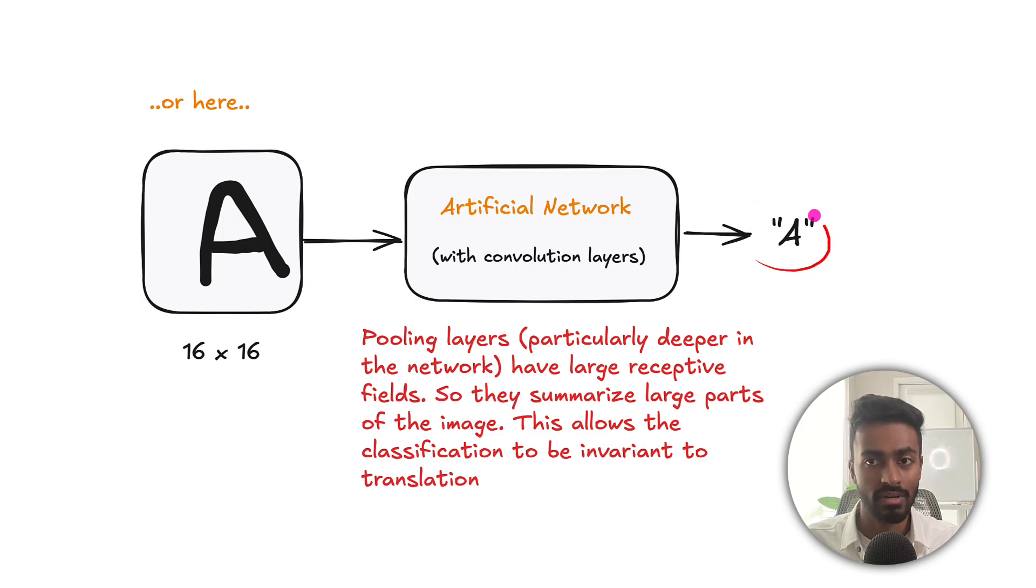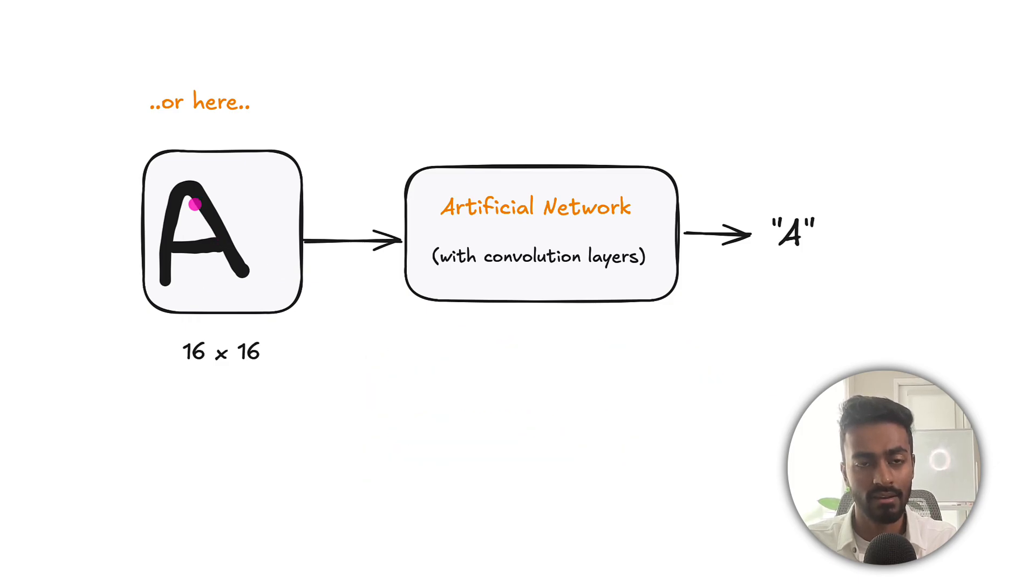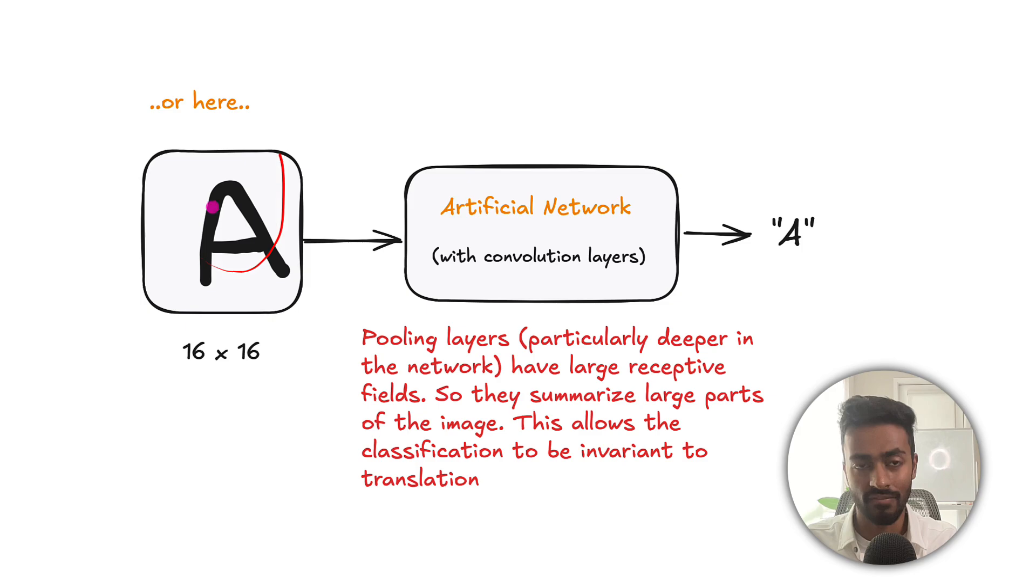But interestingly, in order to make sure this output is still unchanged, despite the translation, we can use something called pooling. So pooling layers, particularly in deeper parts of the network, they have large receptive fields. So that means that they're able to see larger swaths of the image itself. And the operation of pooling like when we do a max pooling or an average pooling is to summarize these large parts of the input image. And what this allows is the classification to be invariant, this classification output to be invariant with respect to translation. So that means that no matter where this A lies, whether it's here or here or here, it wouldn't really make too much of a difference because the pooling operation is going to summarize large parts of the image. And it should still be able to detect the same A. And so convolution and pooling can work quite well together in order to deal with this translation issue.